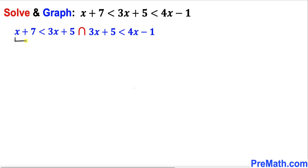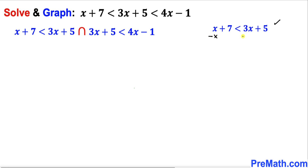Let's focus on the first simple inequality: x plus 7 is less than 3x plus 5. To solve for x, we subtract x from both sides, giving us 7 is less than 2x plus 5. Then we subtract 5 from both sides: 7 minus 5 is 2, so 2 is less than 2x.